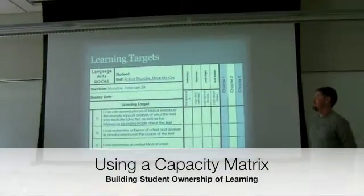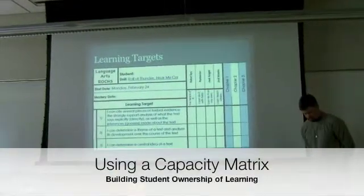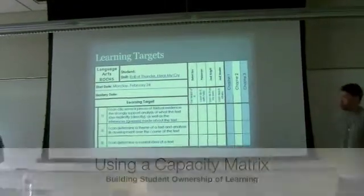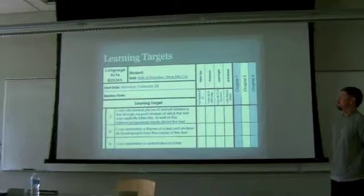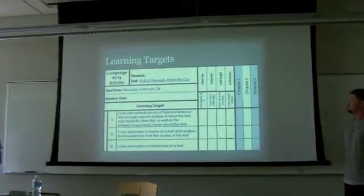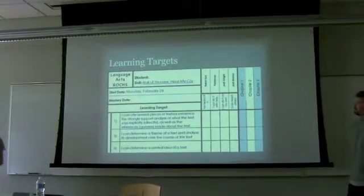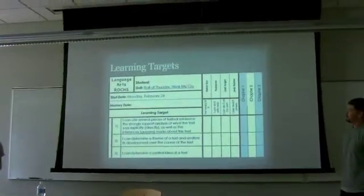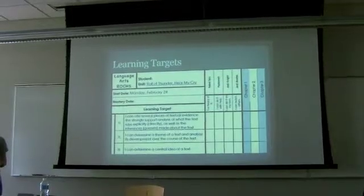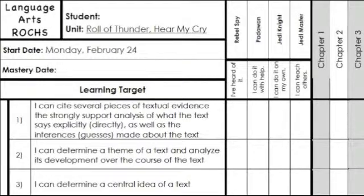The first big part of quality learning is learning targets, which are the standards of things our students need to be able to know how to do. We give those to our students on something called a matrix. This is an example of a matrix that I used for a novel we were reading. We list the learning targets like citing pieces of textual evidence, determining a theme, a central idea.